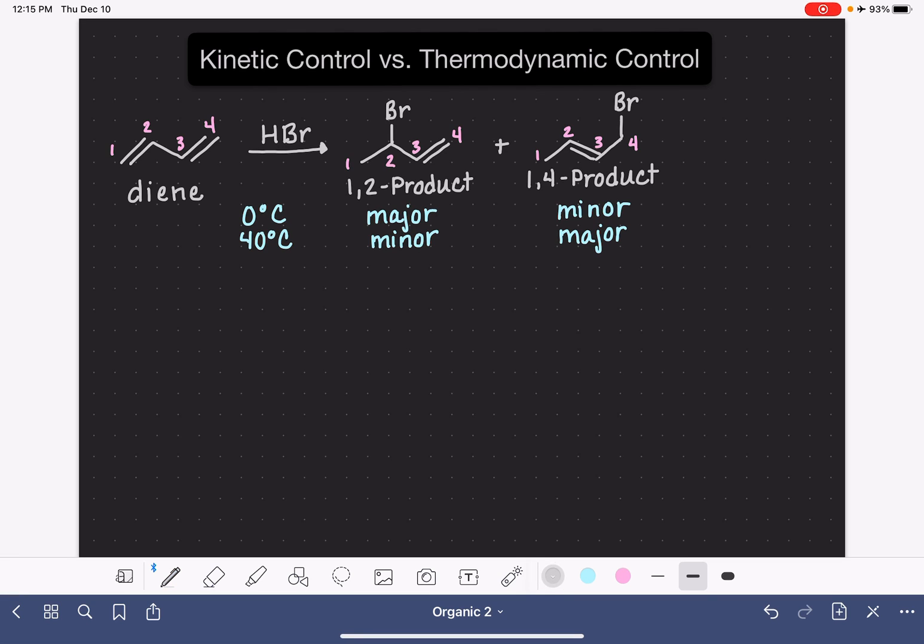We can explain the different distributions of these products by looking at the mechanism of the reaction. So I'm going to draw the mechanism of this exact reaction, 1-3 butadiene with HBr.